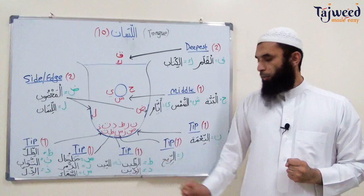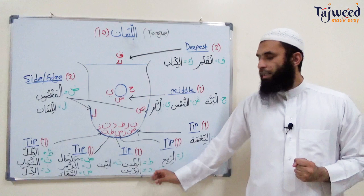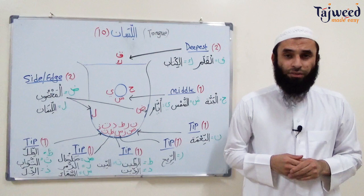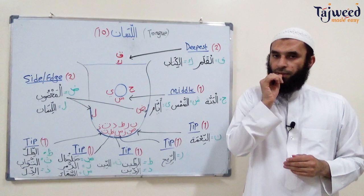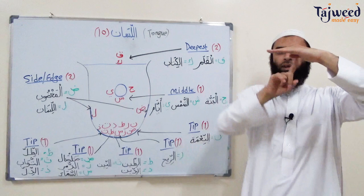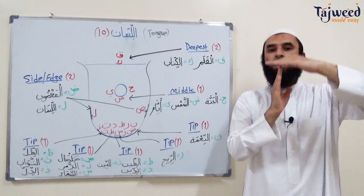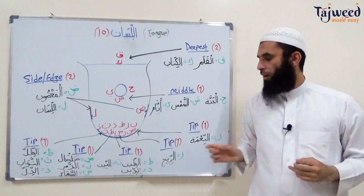Then there is one makhraj point shared by three letters: Ta, Dal, and Ta. As in at-teen, at-deen, at-teen. The makhraj point for these three letters is the tip of the tongue touching the gum line of the front two teeth.